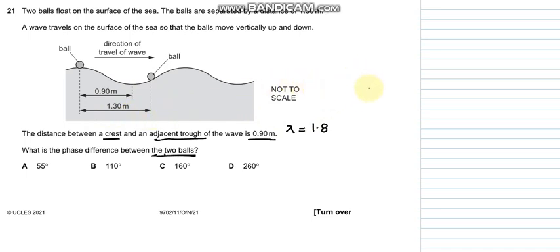So we can plug in the formula: distance, which is 1.3, divided by lambda, which is 1.8, multiplied by 360 degrees. This would make 260 degrees, so D is the appropriate answer.